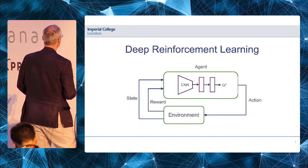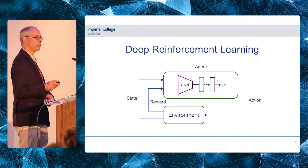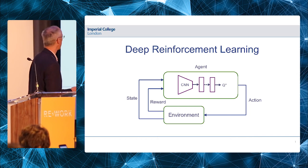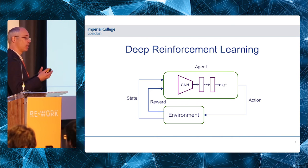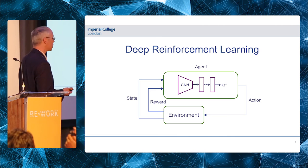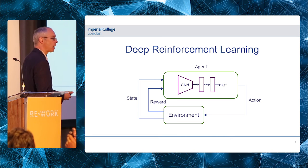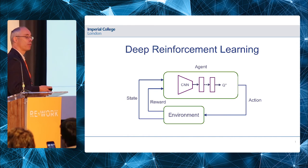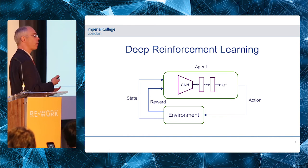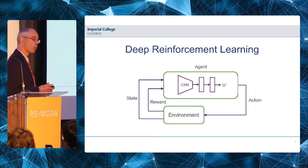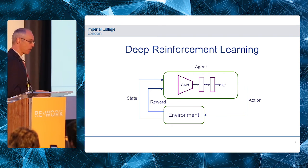Reinforcement learning is all about having an agent that interacts with an environment and carries out trial-and-error learning. What we're interested in is maximizing future reward over time — finding some policy for action that maximizes future reward over time. It's a very general framework for artificial intelligence.